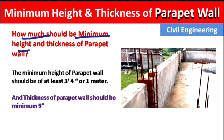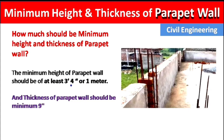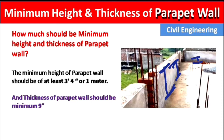Now, how much should the minimum height of the parapet wall be? The minimum height of the parapet wall should be at least three feet four inches, which means one meter. We should not provide a height less than one meter, because a low parapet wall will not prevent objects or children from falling off the roof.